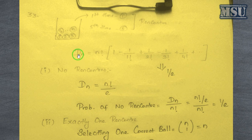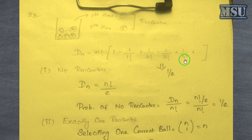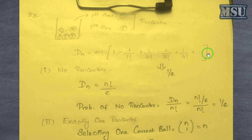We need to know the equation for a derangement. D(n), the number of derangements, equals n! × (1 - 1/1! + 1/2! - 1/3! + 1/4! - ...). This alternating series is equivalent to 1/e, so even though we have an infinite series, this can be written as n!/e. For clarification, refer to the previous video lectures on my channel.